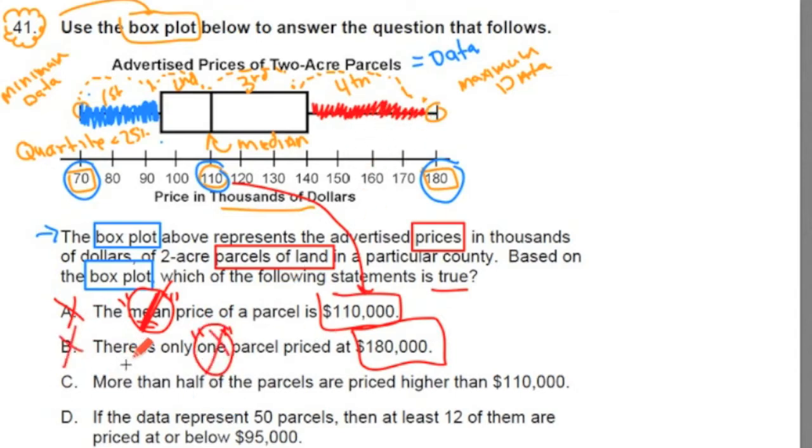Let's look at C. More than half the parcels are priced higher than $110,000. Now $110,000 in our diagram is our median, our middle number, which means if we think about it, 50%, exactly 50%, are greater than the median, and 50% are less than the median. So there can't be more than 50% or more than half. It is exactly half or greater and half or less than the median. So for that reason, C is out.